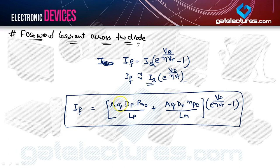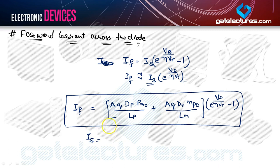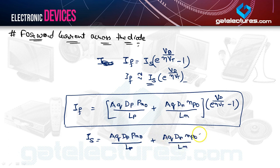Where A is the area of cross section, Q is the electronic charge, Dp is the diffusion constant of holes, Pn0 is the concentration of holes in the N region, Lp is the diffusion length of holes in the N region, Dn is the diffusion constant of electrons in the P region, and Ln is the diffusion length of electrons in the P region. From here we can conclude that the reverse saturation current IS — or the leakage current — is equal to: A·Q·Dp·Pn0 / Lp + A·Q·Dn·Np0 / Ln.